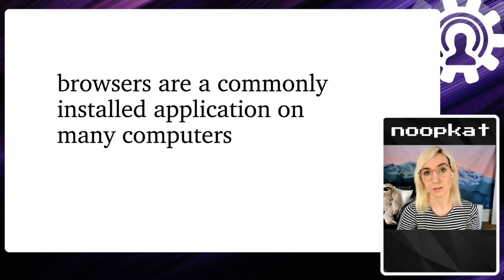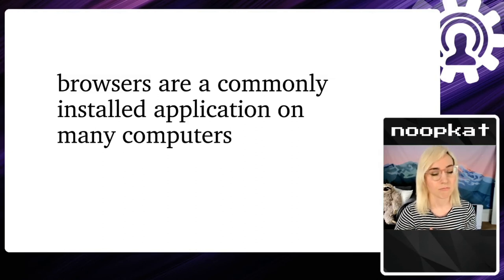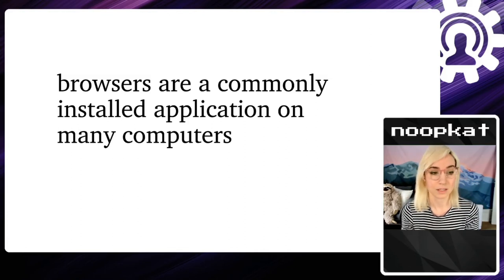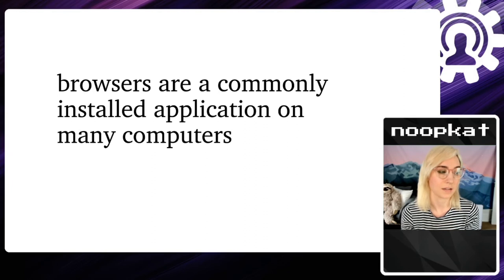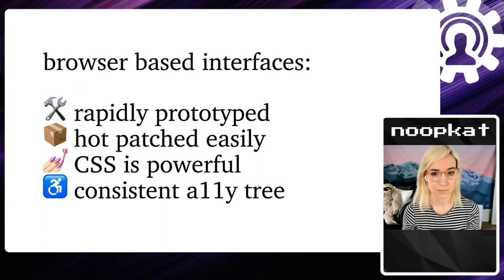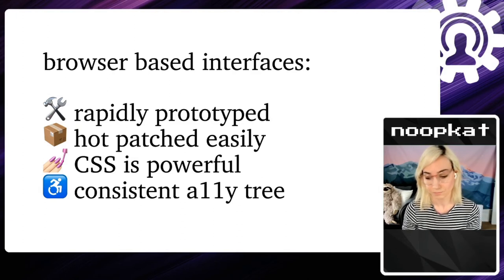Browsers are a commonly installed application on many computers, so not asking the user to download all these different bespoke one-of-a-kind applications just to use your stuff — that's not a great experience. Giving people just a URL, like I did with the Progressive Web Boy, is a pretty good idea. You're not asking a lot of them, and you're still asking their permission to use the device. Whereas a lot of programs you download at the OS level don't even ask you those permissions. I really like the security model that's being built into these APIs and browsers — browser-based interfaces are rapidly prototyped, hot-patched easily, CSS is really powerful, and there's a consistent accessibility tree.